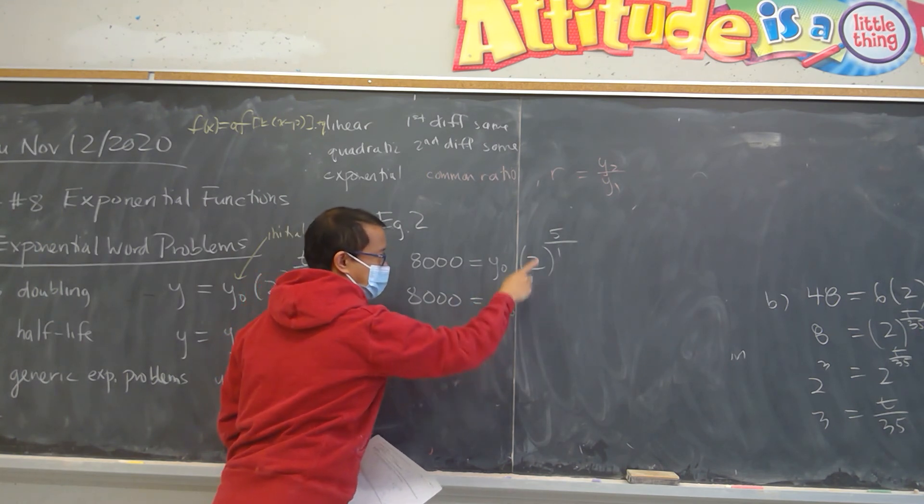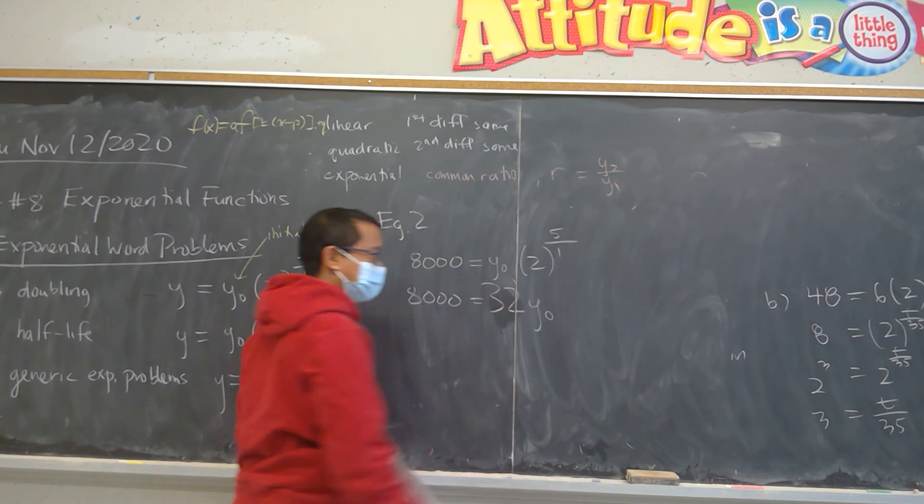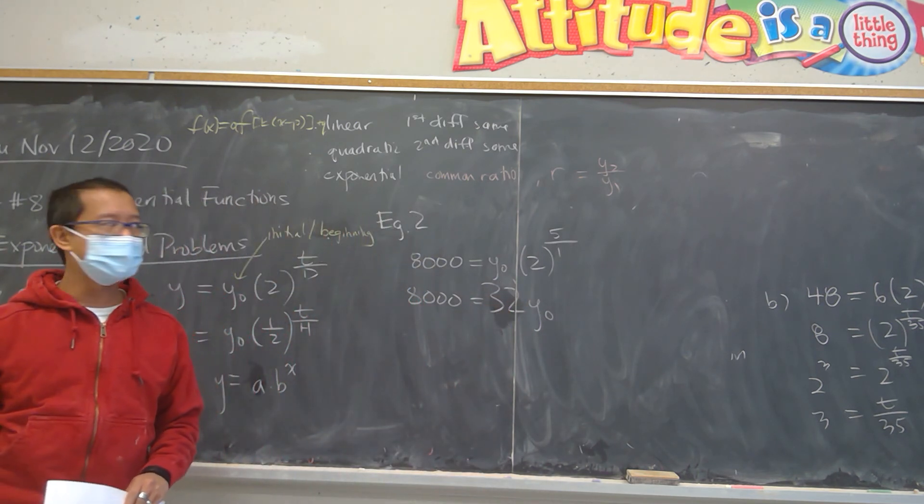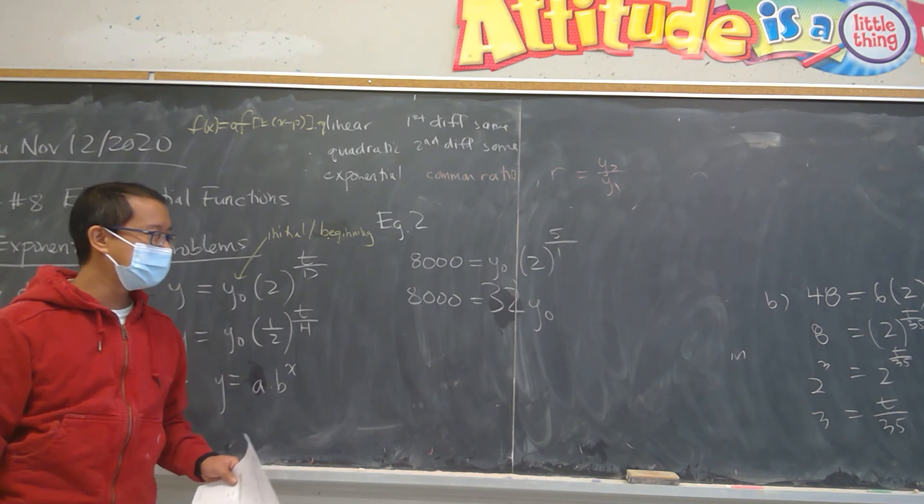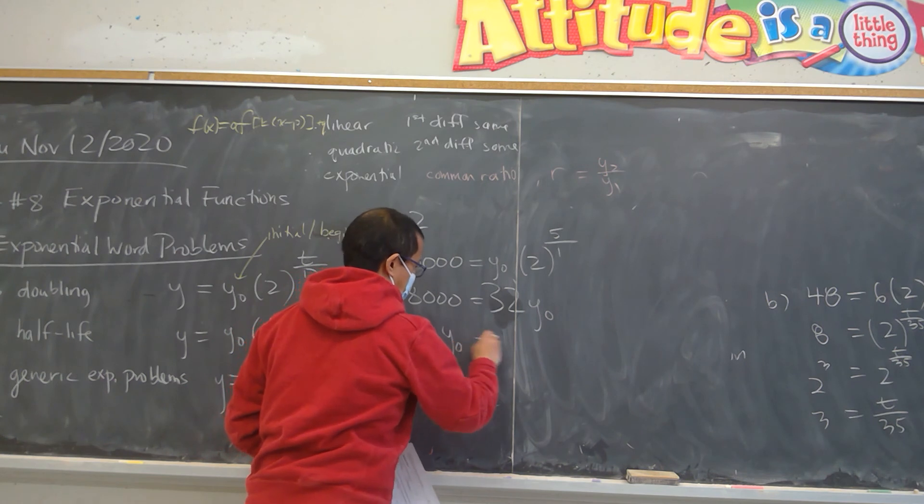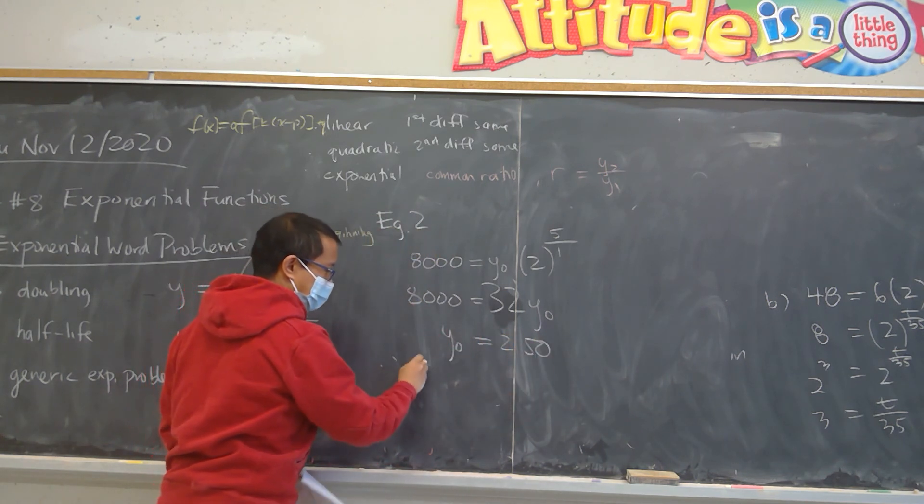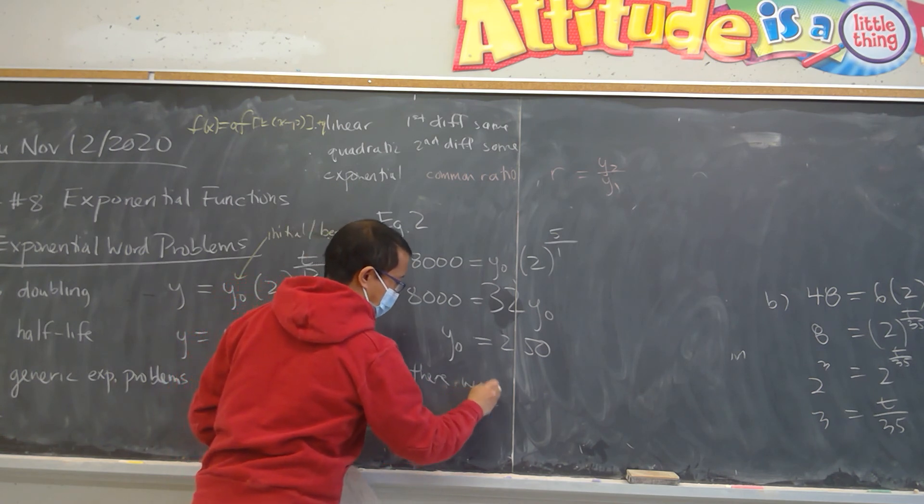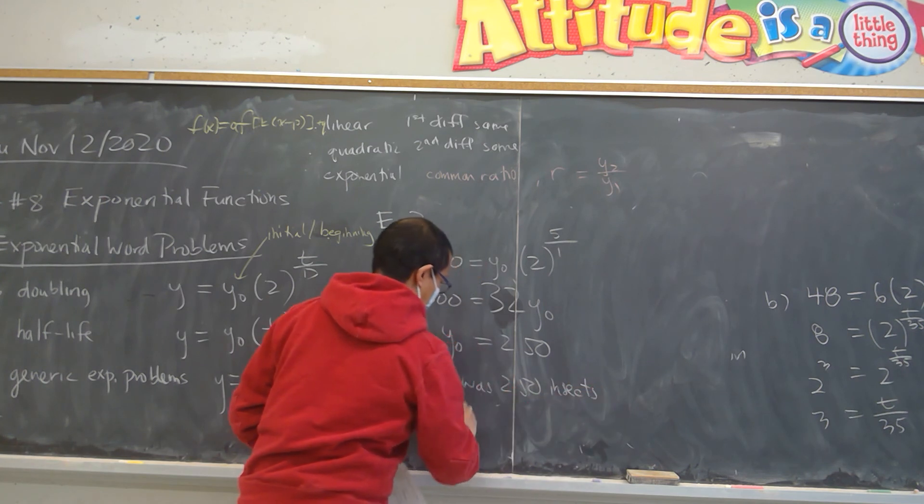8,000, y-naught. And that's actually 32. Well 32 is coefficient up front, so it's a little cleaner. Hopefully you guys know how to do that. 2 to the 5 is 32. Divide both sides by 32. I think we're going to get 250. And then of course the answer is really easy. There was 250 insects initially.